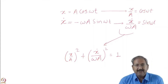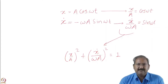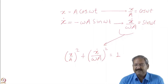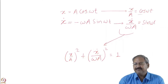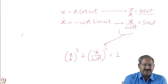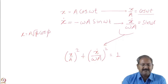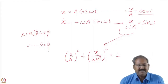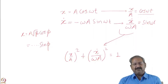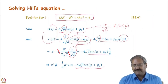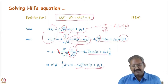Similarly here, the LHS contains S-dependent terms, but the combination of these terms gives a constant. So this is the invariant of the motion. The combination of S-dependent parameters β, α, γ and the trajectory coordinates x, x' remains constant along the design trajectory.